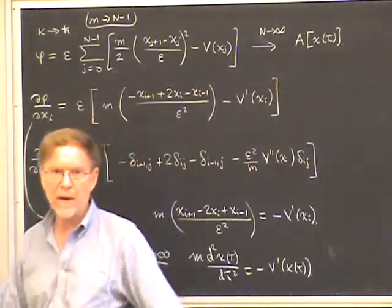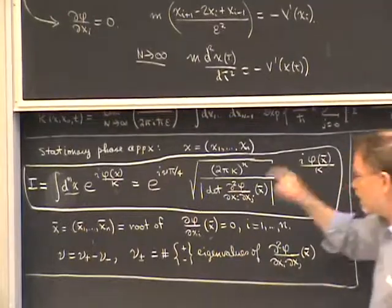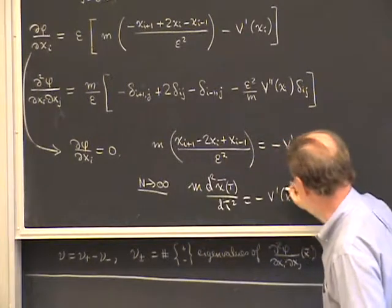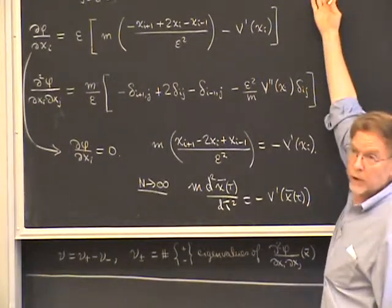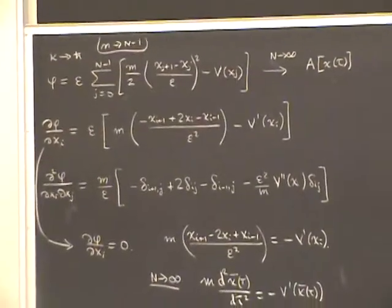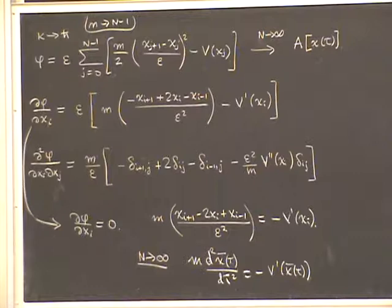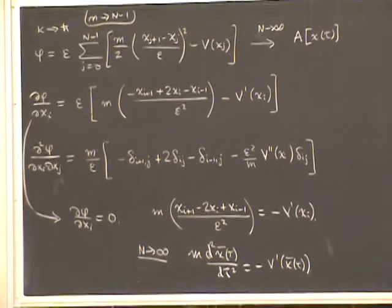So the classical paths are the stationary phase points when the limit goes to infinity — they are points of path space. To follow the notation where a bar denotes the stationary phase point, we put a bar on the path x-bar to distinguish classically allowed paths, which are solutions of Newton's equations, from any other path that can be put into the action. This is the usual derivation that stationary action leads to classical mechanics. When we determine the stationary phase points, they are the classical paths.